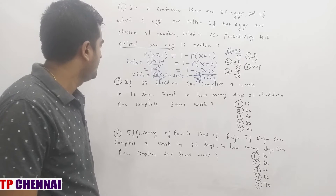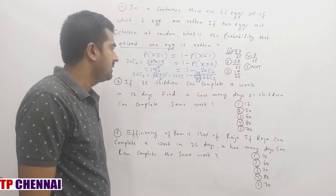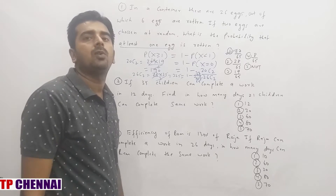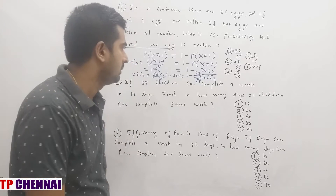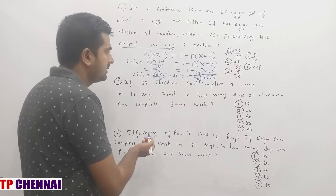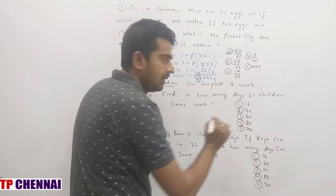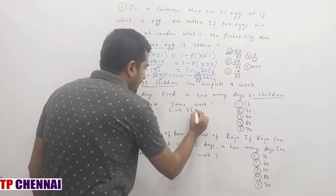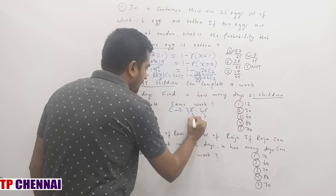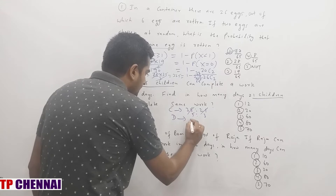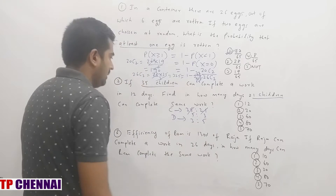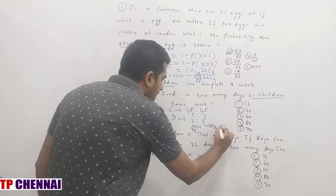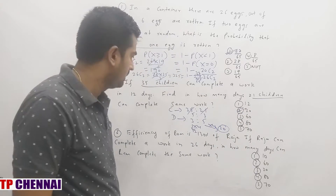Second question: If 35 children can complete a work in 12 days, find in how many days 21 children can complete the same work. Work is constant, so capacity ratio is inversely proportional to days ratio. Capacity ratio is 35:21, simplified to 5:3. So days ratio is 3:5. Since 12 days corresponds to the 3-part, multiply by 4 to get 20 days, which is the second option.